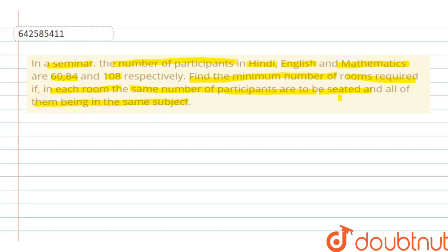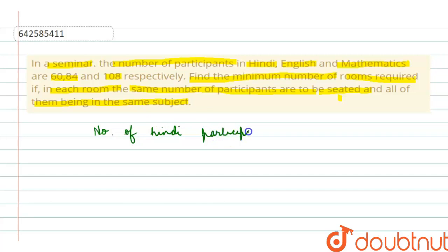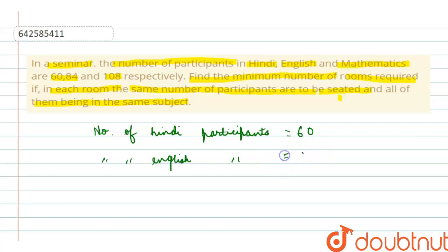The number of Hindi participants is 60, the number of English participants is 84, and the number of Mathematics participants is 108.